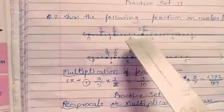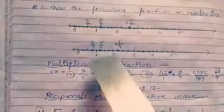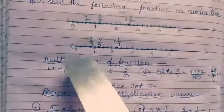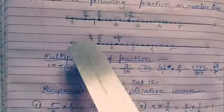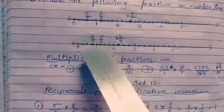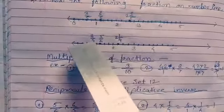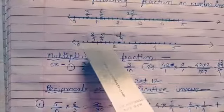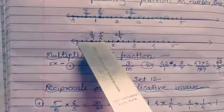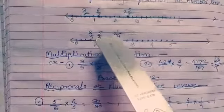Now we darken that number. Question number 2 continues: 3 upon 4, 5 upon 4, and 2 and 1 upon 4. The denominator is 4.